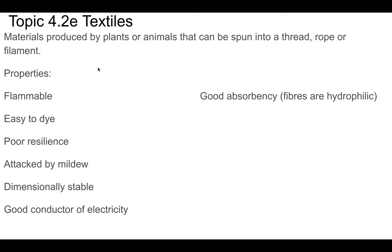Natural fibers are materials produced by a plant or animal that can be spun into a thread, rope, or filament. They have lots of properties: they're flammable; they're easy to dye because they have good absorbency — they're hydrophilic, meaning they love water. They don't have great resilience, meaning they're not really going to stand the test of time and break down quite easily.